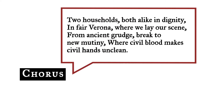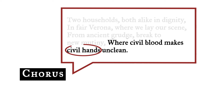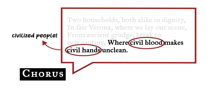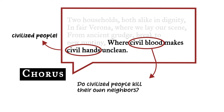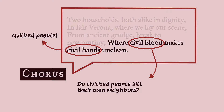True enough. When Shakespeare writes, "Where civil blood makes civil hands unclean," he's using civil in two ways. The family's hands are civil because they belong to upright, civilized members of society. But the blood on those hands is not the blood of some foreign enemy. It's civil blood — that is, the blood of their fellow citizens of Verona.